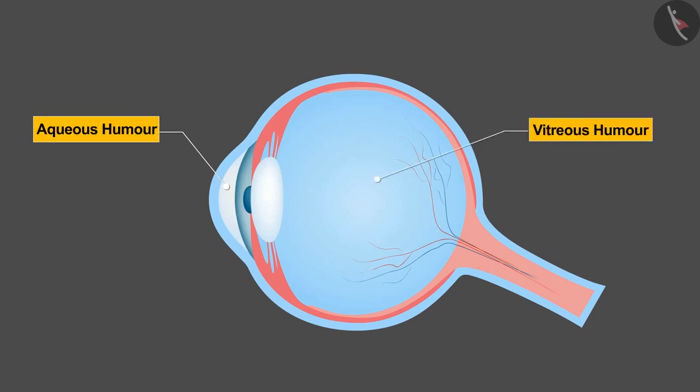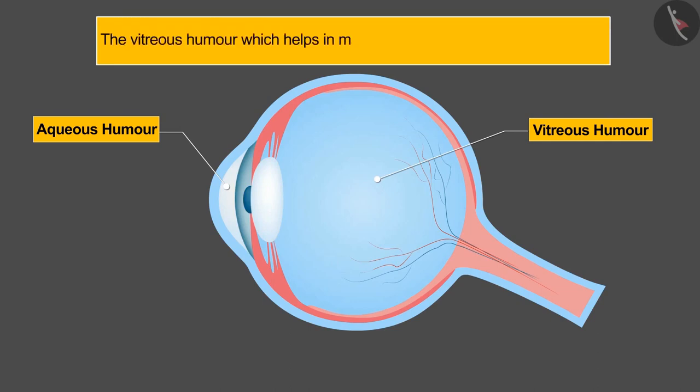The second tissue filling is the vitreous humor, which helps in maintaining the round shape of the eyes.